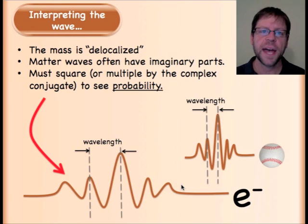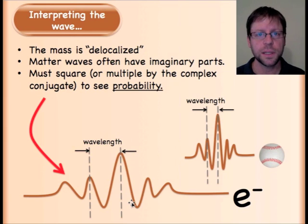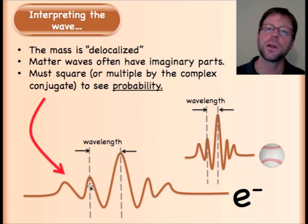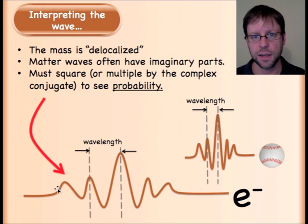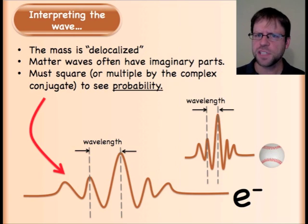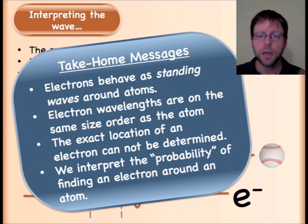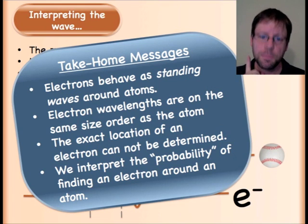Instead what we can do is we can square it, or complex conjugate multiplication, we can convert this mathematics into probability. So where is it going to be located? A big old peak means it's probable that it would be located there. However it might be located over here or it might be located over here. So again, really abstract stuff. You could do an hour-long video just on this.